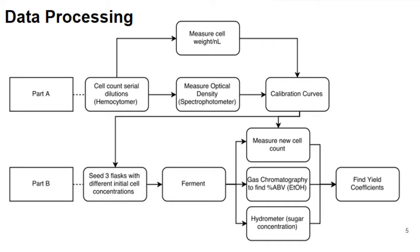we determined the new cell concentration via these calibration curves from part A. We performed gas chromatography to find the alcohol by volume percentage and used a hydrometer to determine the sugar concentration present. With these three pieces of information, we were able to define yield coefficients that are useful in our Monod kinetics equations.